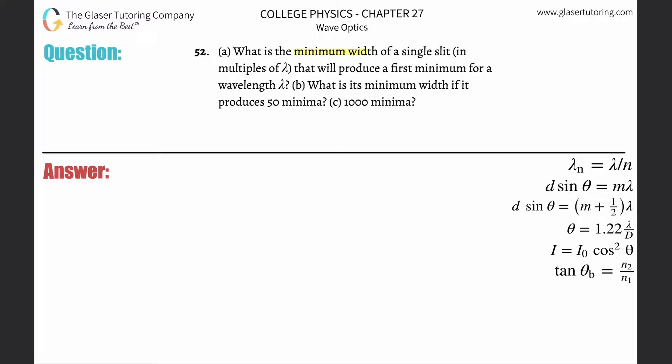Number 52, what is the minimum width of a single slit in multiples of lambda that will produce a first minimum for a wavelength lambda?